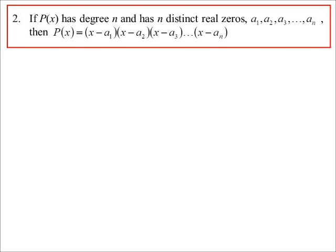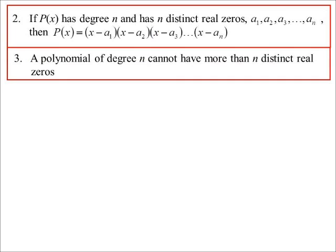Right, so the next idea. If we know the polynomial's degree n and we go and find n zeros, then that must be the polynomial. Because you can't have more than n solutions to a polynomial. A quadratic, maximum of two solutions; cubic, three solutions; and so on. A polynomial of degree n cannot have more than n zeros.